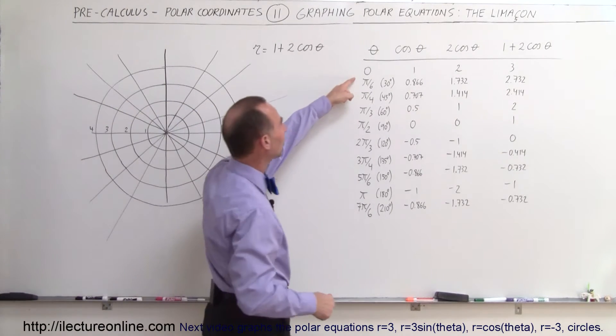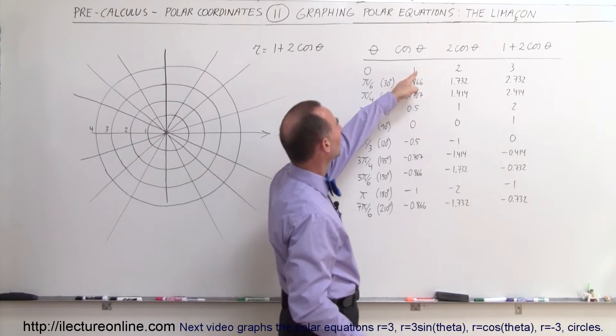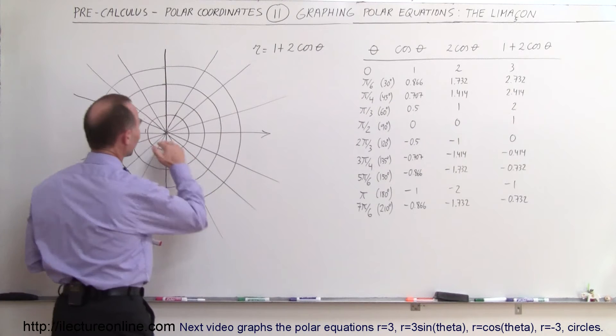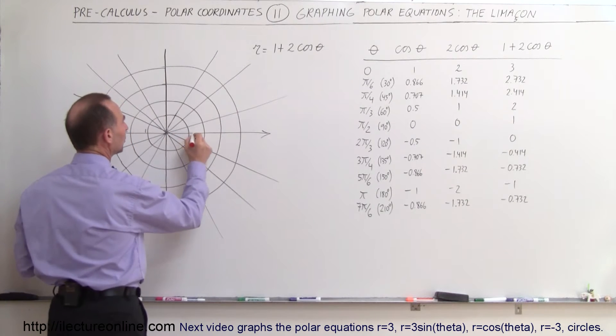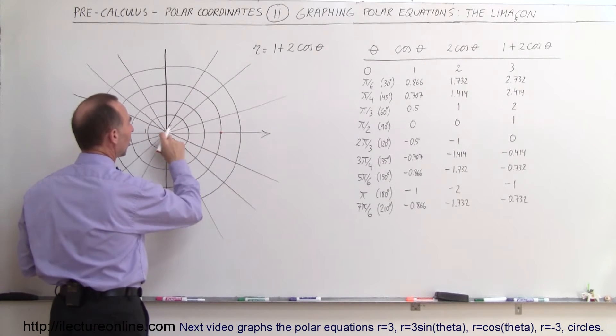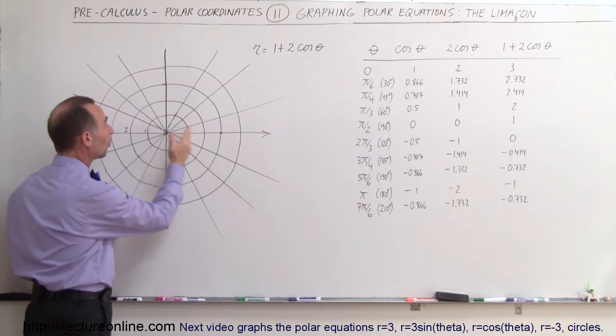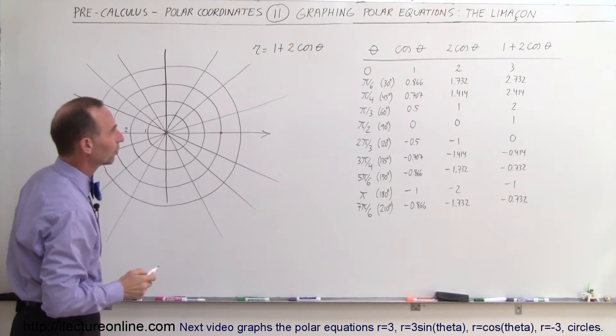So starting out with theta equals 0, then cosine of theta equals 1, twice is equal to 2, and then add one more is equal to 3. That means at a 0 degree angle, the point would be 3 away. So the polar coordinate r would be 3 units away from the origin at an angle of 0 degrees.